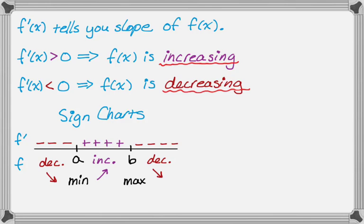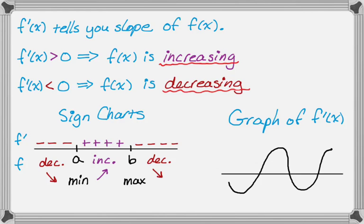You might also, instead of making a sign chart, you might actually be given the graph of f prime. Maybe it looks like this. So in this case, anywhere the graph is above the x-axis, f prime is positive, which would mean that f is increasing. So, for example, on this interval and this interval, we know that f is going to be increasing. And then on this interval and this interval, since f prime is below the x-axis, we know that f is going to be decreasing.